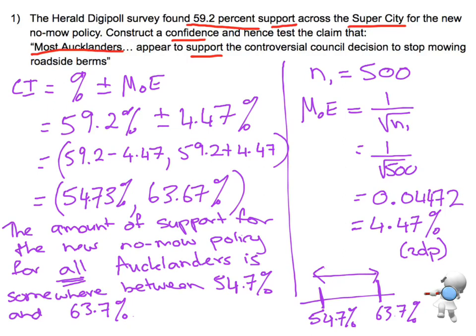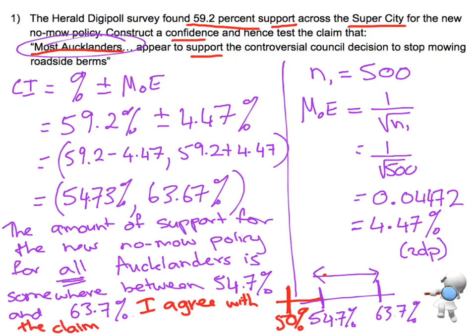I've now constructed the confidence interval. Now I've got to look at the claim — the claim is that most Aucklanders support it. What would 'most' mean? Compared to 50%: if we're talking about more than half, then that would be most, that would be the majority. In this case, the entire confidence interval is above 50%. So therefore I agree with the claim, because the entire confidence interval is above 50%. That is the answer to that question.